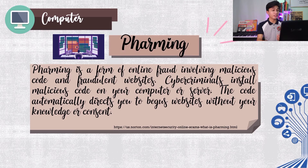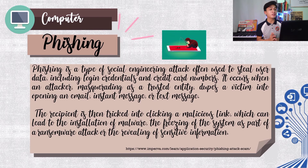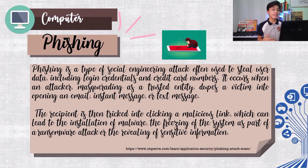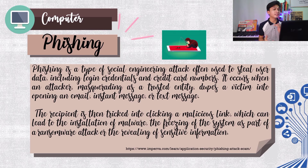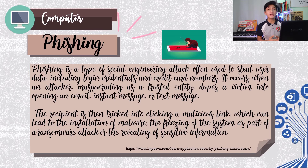And we have phishing. Phishing is a type of social engineering attack often used to steal user data including login credentials and credit card numbers. It occurs when an attacker, masquerading as a trusted entity, dupes a victim into opening an email, instant message, or text message. The recipient is then tricked into clicking a malicious link, which can lead to the installation of malware, a ransomware attack, or the revealing of sensitive information. Phishing is where attackers send a fraudulent message designed to trick a human victim into revealing sensitive information.